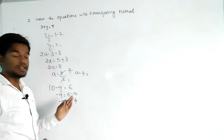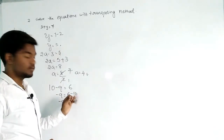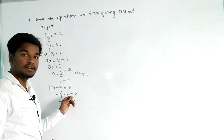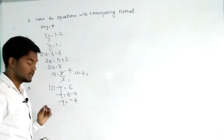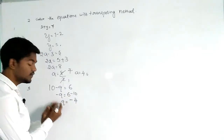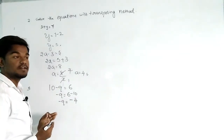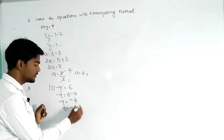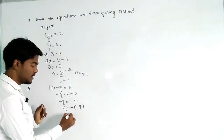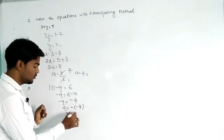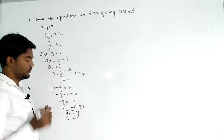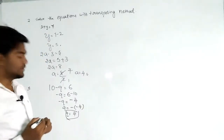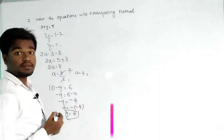6 minus 10 gives minus 4. The bigger number is 10 and minus is before it, so the result is minus 4. Then shifting the minus sign to the right side, minus × minus becomes plus, so q = +4.